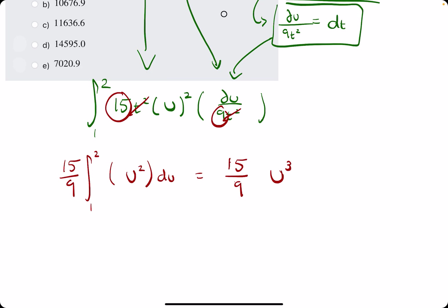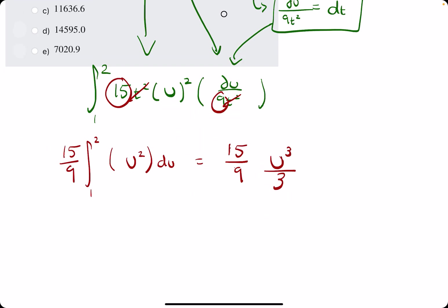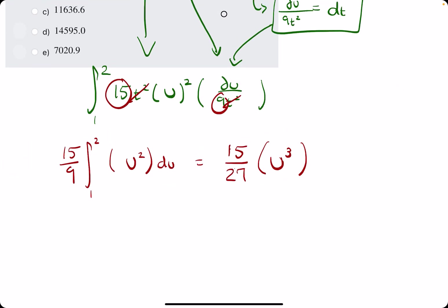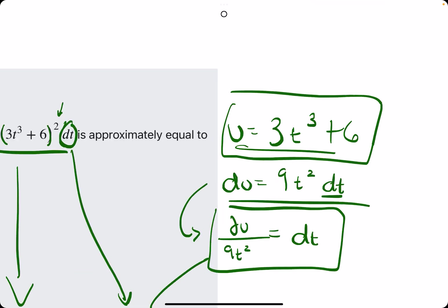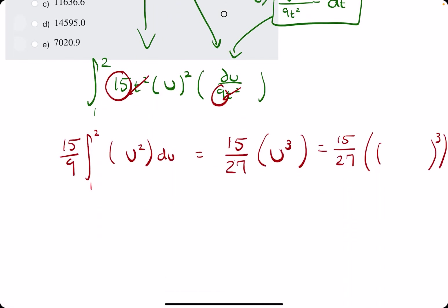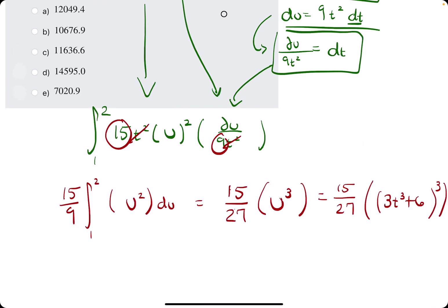So, we just have 15 over 9 and then we take the antiderivative of u². So we add 1 to the exponent and then divide by whatever that new exponent is. So we have this. If we want, we can multiply the 9 and 3 to get 27 to sort of just make that our new coefficient. And then, with u³. Now, we want to substitute the u back in. So, we have something cubed, u³, but u was 3t³ + 6.